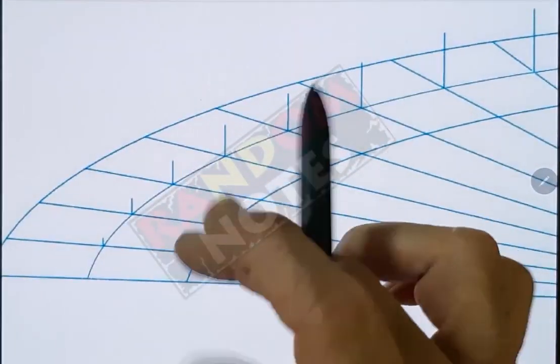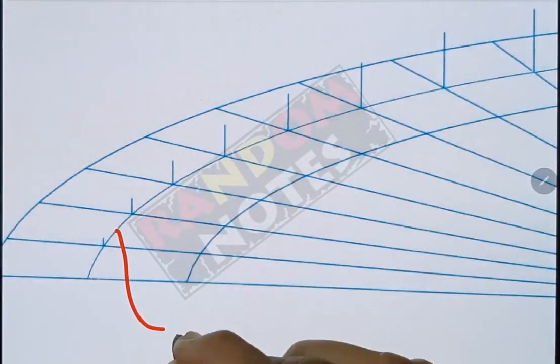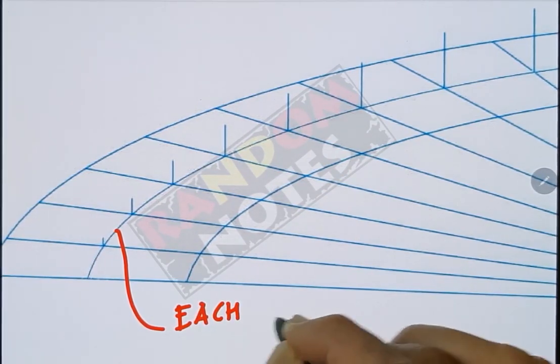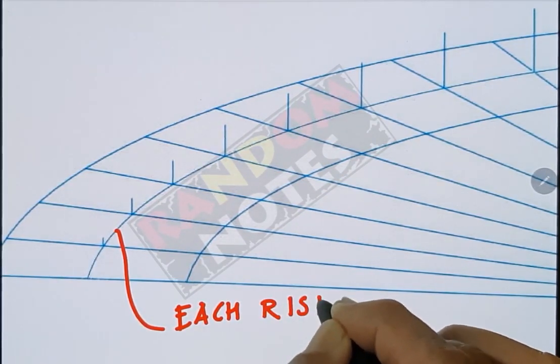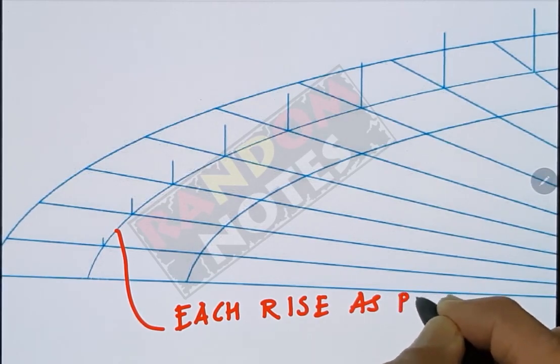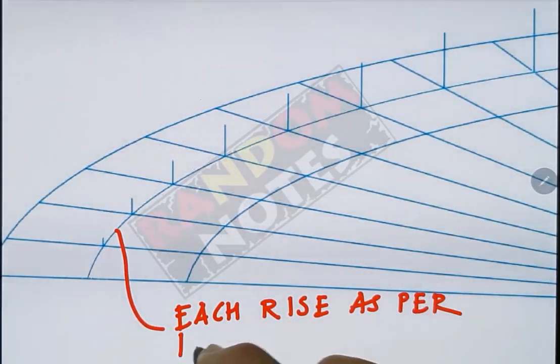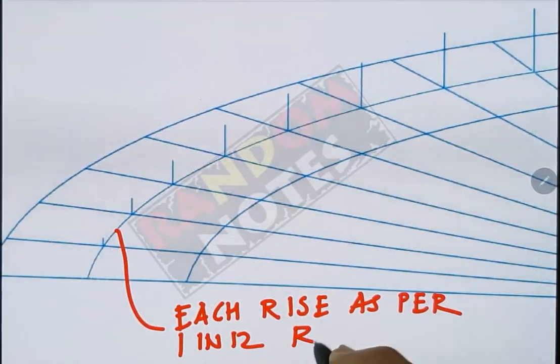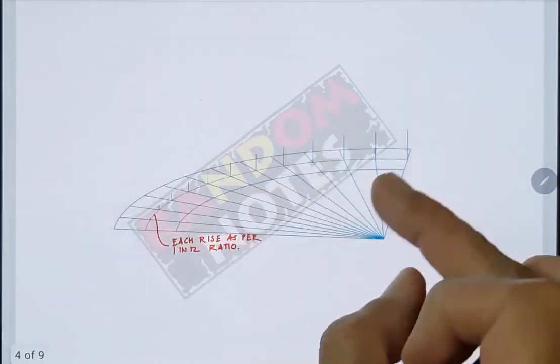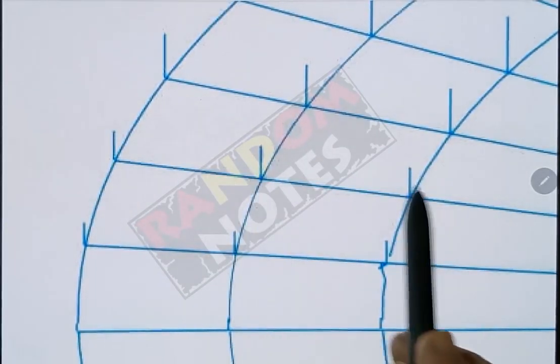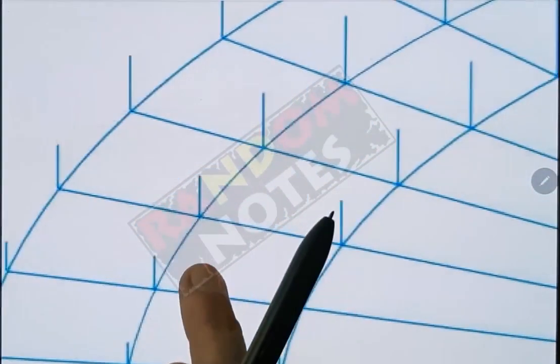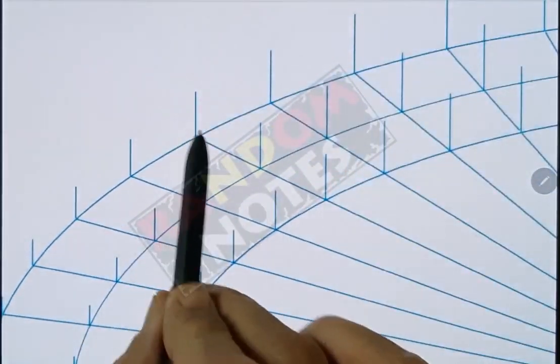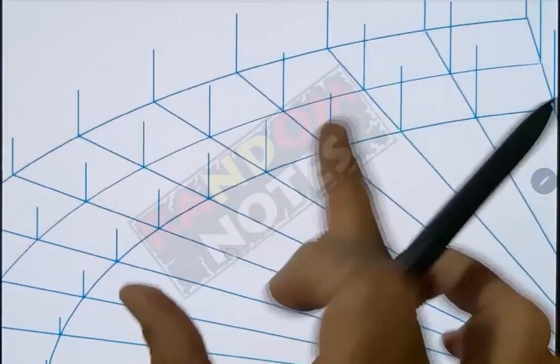The height of each vertical line is taken as per the 1 in 12 slope. Then correspondingly same height lines will also be made at the meeting of that radial line with the inner arc and the outer arc. Thus each radial line will have three verticals with the same height.